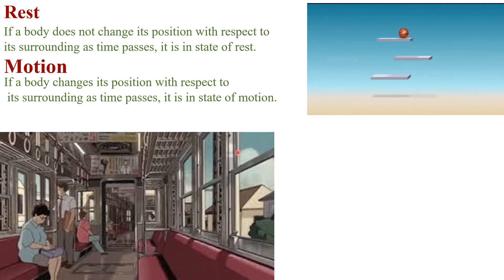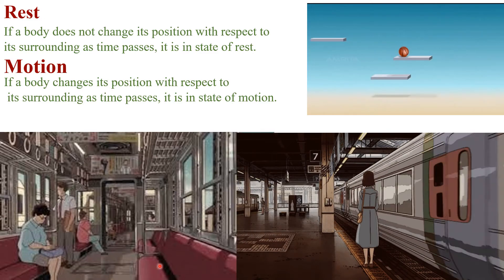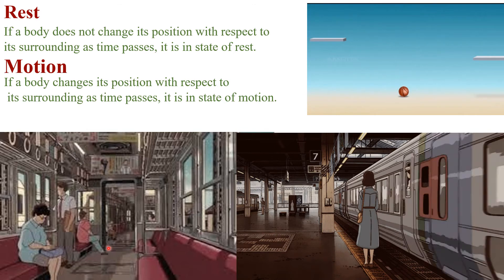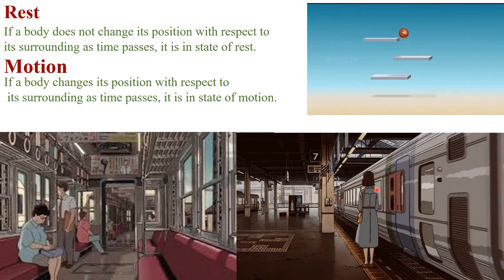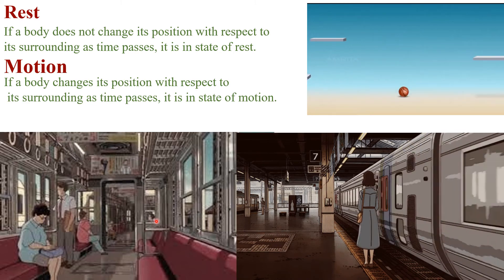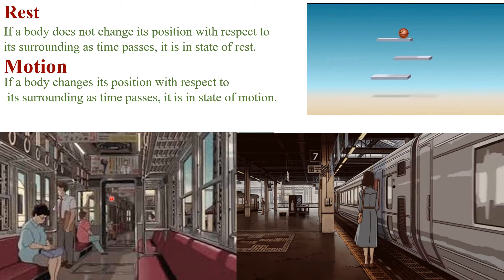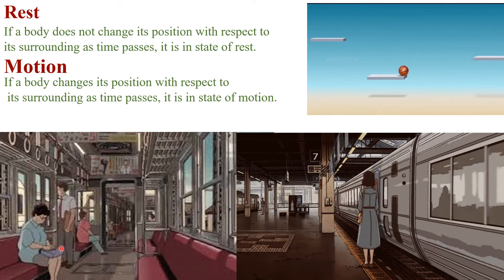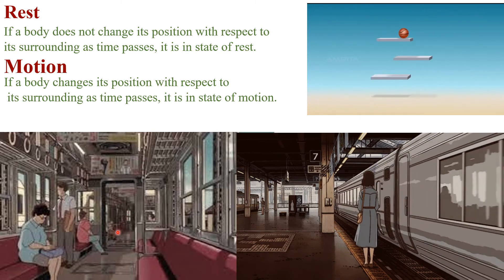Rest and motion are relative to each other. For example, in this train these people are sitting and they are in a state of rest according to each other. Rest and motion are relative to each other.